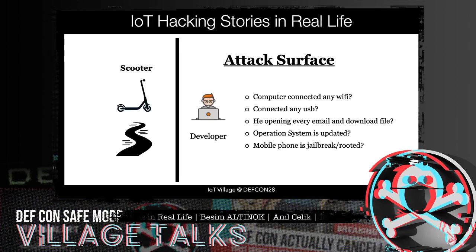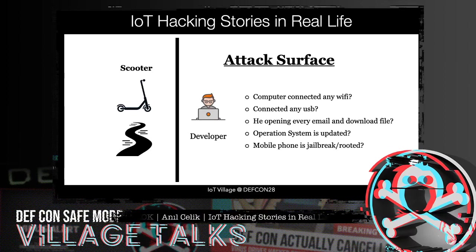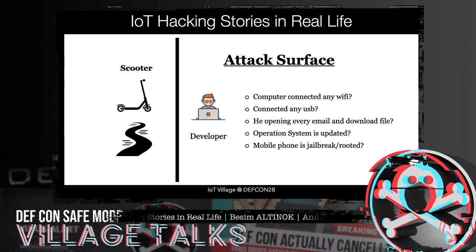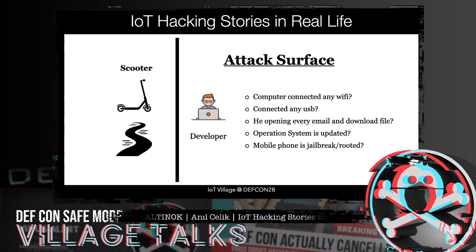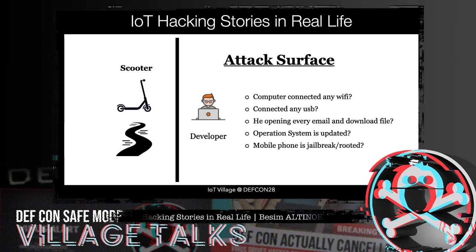The main weakness here is the human and the devices they use. We can expand the attack surface by asking: is the developer's laptop connected to any Wi-Fi, connected to any USB? Do they open every email and download or run files? Is the operating system updated? Is the developer's mobile phone jailbroken or rooted? After asking these questions, we can launch a social engineering attack or hack the wireless network the person is using. In our research, we saw that developers are very careless.